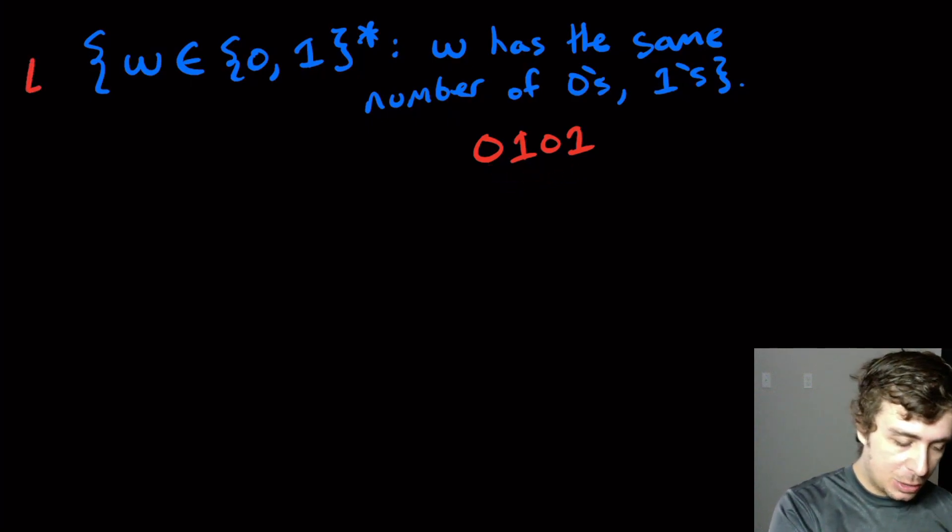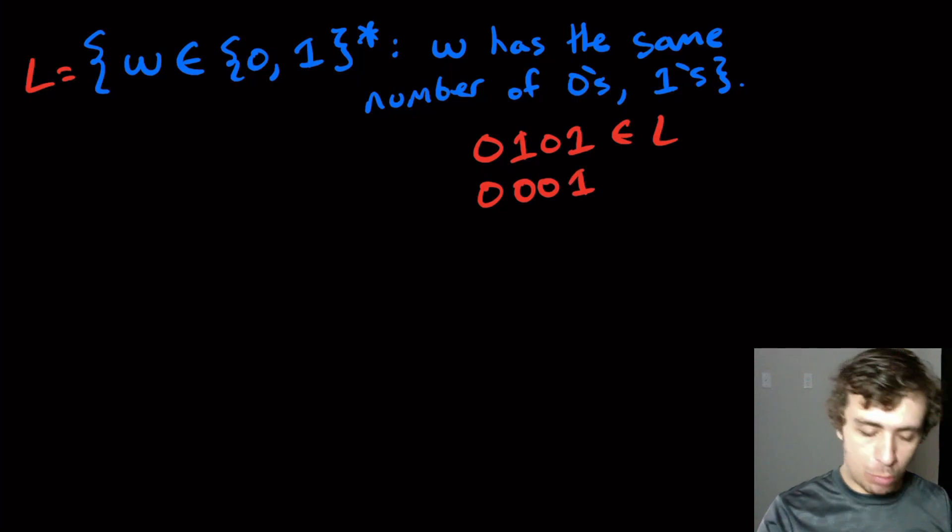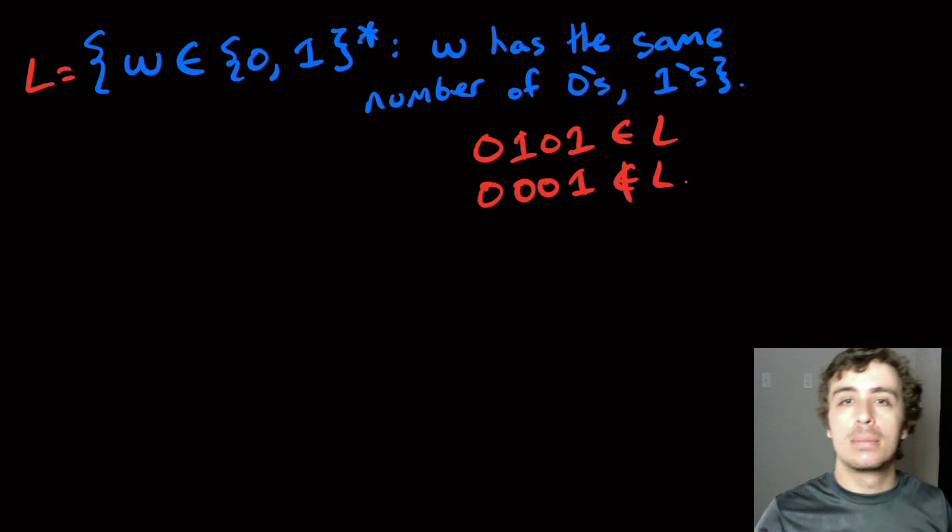So that would be, let's call this language L. So this would be in L. But if I look at the string 0001, that has a different number of zeros and ones, and so that thing is not in L. Okay, so I want to show that this thing is not regular.